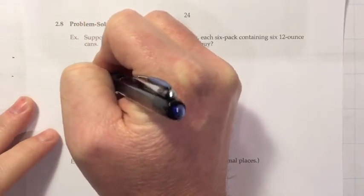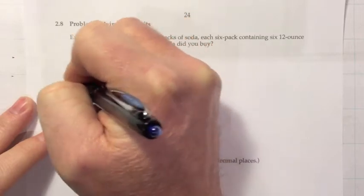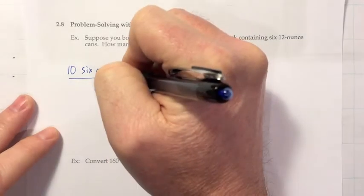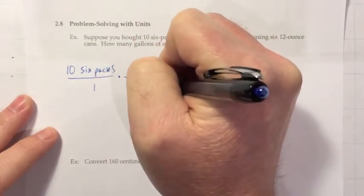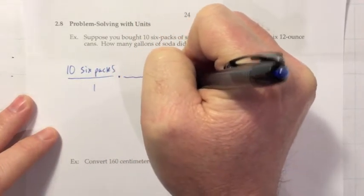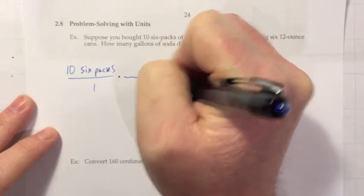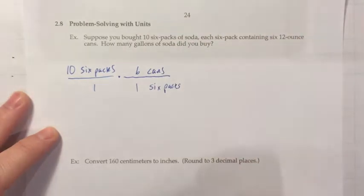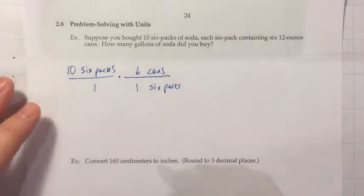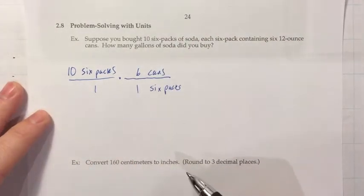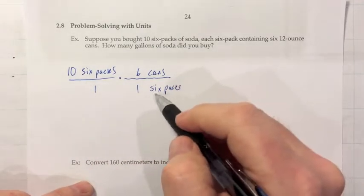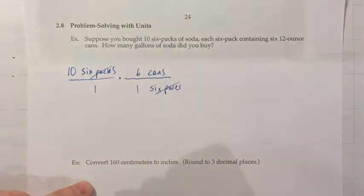So we have ten six-packs. That's what we started off with and we want to end up with gallons. So ten six-packs. Got to get the six-packs to go away. So in one six-pack there are six cans. That's almost a silly conversion but it is one you have to make. You might even just do it mentally that ten six-packs would be 60 cans. But this shows you how it would work in terms of making the units cancel.